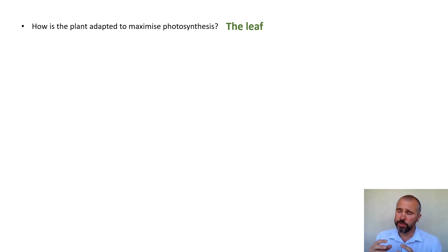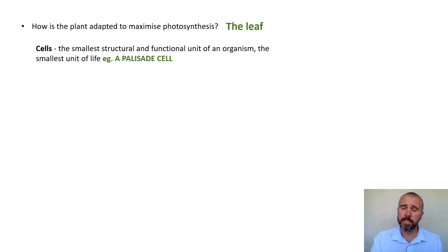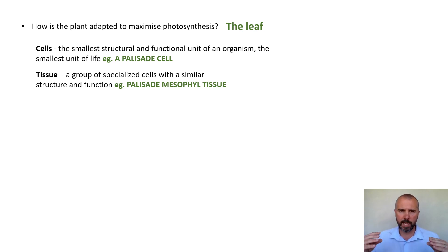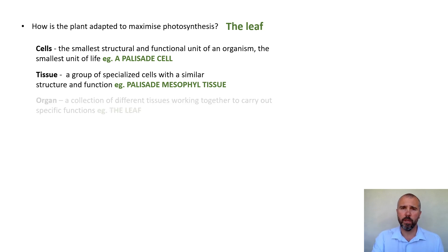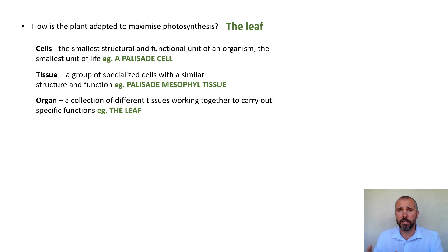It's worth taking a moment to review the hierarchy of cells, tissues, and organs. A cell is the smallest structural and functional unit of life — here, that's the palisade cell. A tissue is a group of specialized cells with similar structure and function working together — here, the palisade mesophyll tissue. An organ is a collection of different tissues working together to carry out specific functions — here, the leaf, containing palisade mesophyll, spongy mesophyll, and epidermis, all working together to maximize photosynthesis.